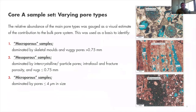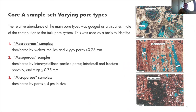For the Core A sample set, the relative abundance of the main pore types was gauged as a visual estimate from light microscope analysis of thin sections. This was used to identify macroporous samples — dominated by skeletal molds and relatively large vugs larger than 0.75 mm — mesoporous samples dominated by intercrystalline, interparticle, interfossil, and fracture porosity with relatively small vugs, and microporous samples dominated by pores smaller than or equal to 4 microns in size.